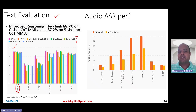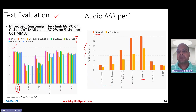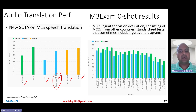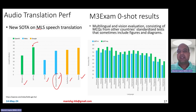From an audio ASR perspective — speech-to-text word error rate — comparing with Whisper V3 across different regions like South Asia and Western Europe, GPT-4O is significantly better than Whisper V3. For audio translation performance, comparing OpenAI's Whisper V3 versus Meta's and Google's audio translation models including Seamless M4T and Gemini, GPT-4O achieves the best results, setting a new state of the art on the MLS benchmark. The M3 exam benchmark covers questions from countries other than the U.S. with multilingual and vision evaluation, including figures and diagrams.